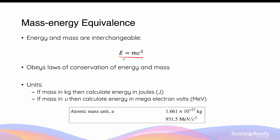In this principle, Einstein proposed that the quantities of energy and mass are in fact interchangeable. There are numerous processes where energy can be converted to mass and whereby mass can be converted to energy. The mass-energy equivalence principle obeys the laws of conservation of energy as well as mass.